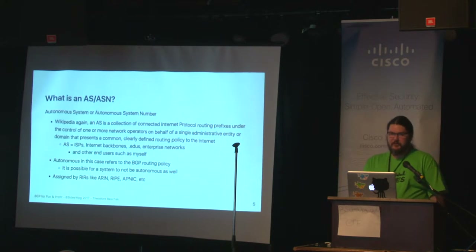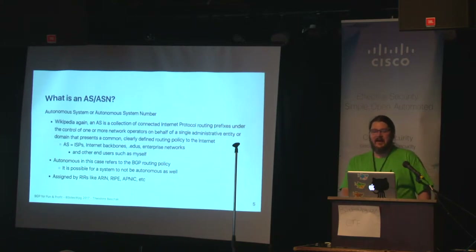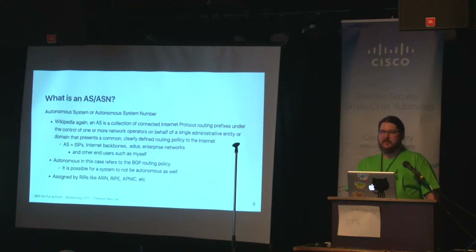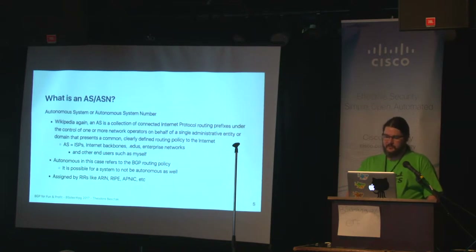The other part of BGP is your autonomous system, or autonomous system number. Wikipedia defines an AS as a collection of connected IP routing prefixes under the control of one or more network operators on behalf of a single administrative entity or domain that presents a common, clearly defined routing policy on the internet. That could be an ISP — sometimes ISPs get large enough to get more than one AS because they have different routing policies. Internet backbones also operate autonomous systems, as do educational networks, enterprise networks, and end users such as myself.